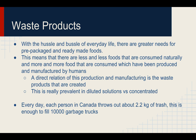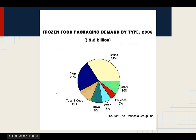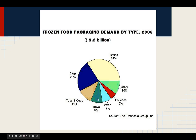Every day, each person in Canada throws out about 2.2 kilograms of trash — enough to fill about 10,000 garbage trucks. This graph here shows food waste through the supply chain, and we can see that when we get home, there's a lot of food waste. The next chart shows frozen packaging by demand — we have a lot of things in boxes and bags, meaning we're consuming a lot of products that require packaging, creating a lot of waste.